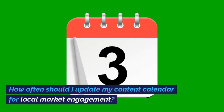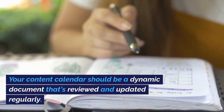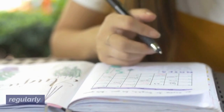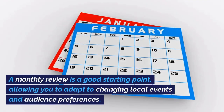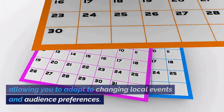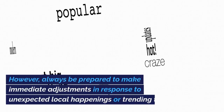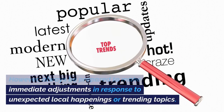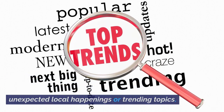How often should I update my content calendar for local market engagement? Your content calendar should be a dynamic document that's reviewed and updated regularly. A monthly review is a good starting point, allowing you to adapt to changing local events and audience preferences. However, always be prepared to make immediate adjustments in response to unexpected local happenings or trending topics.